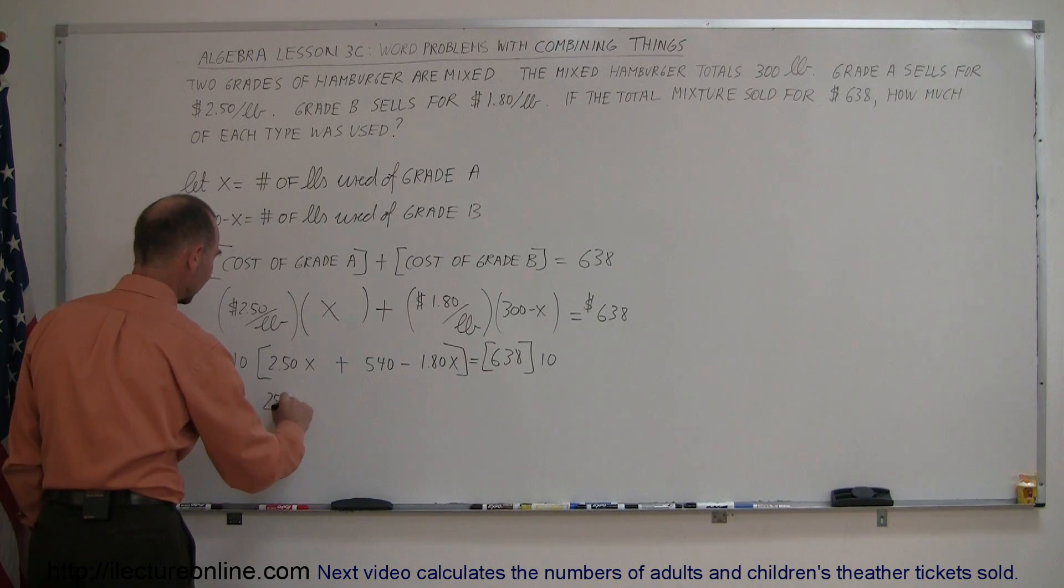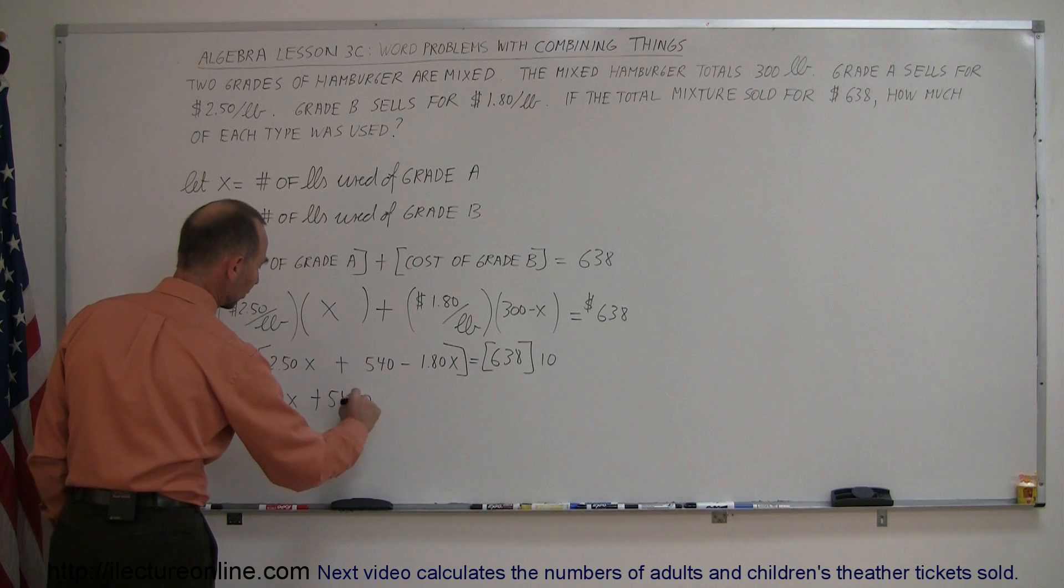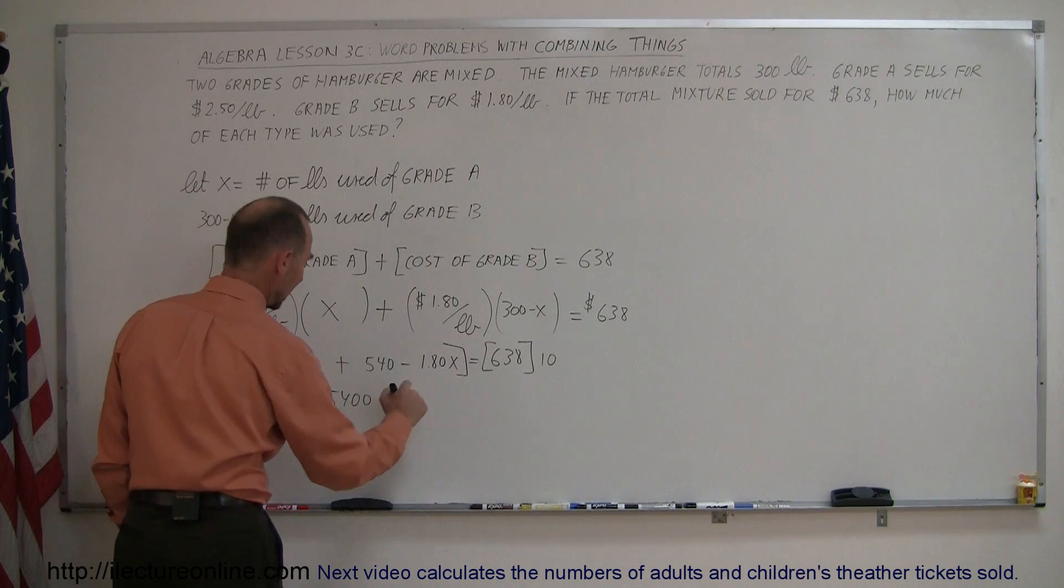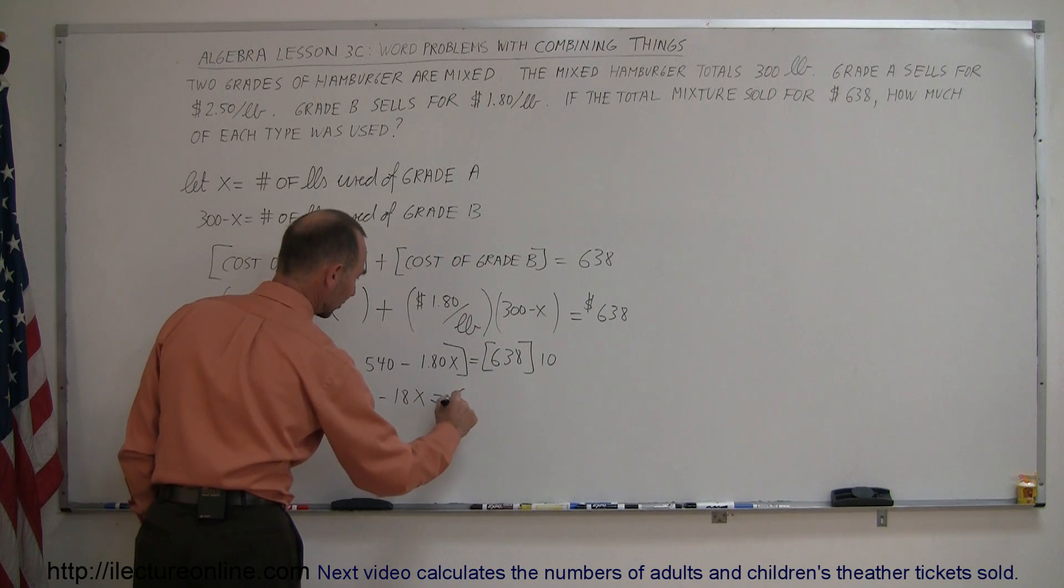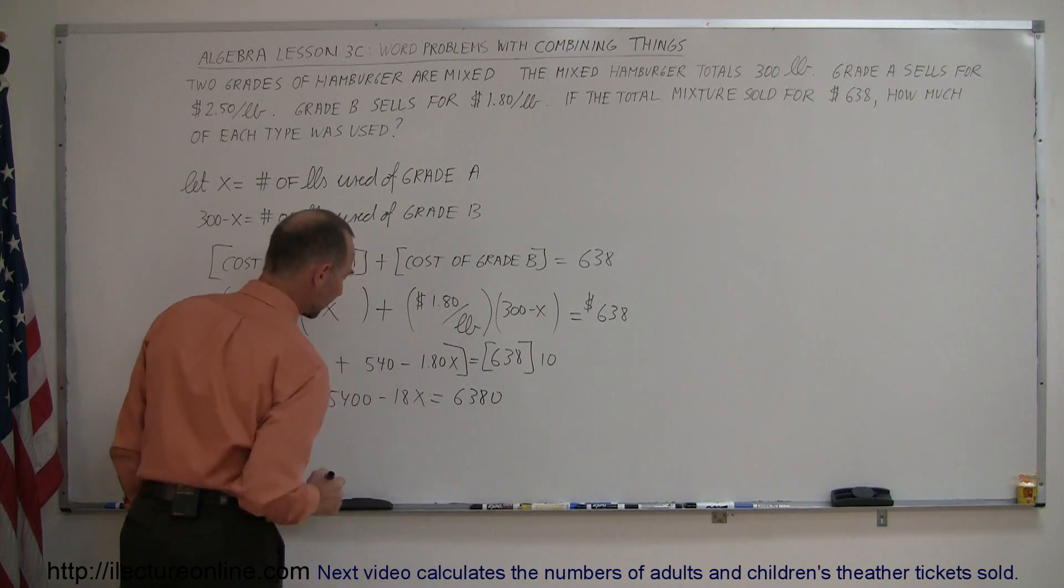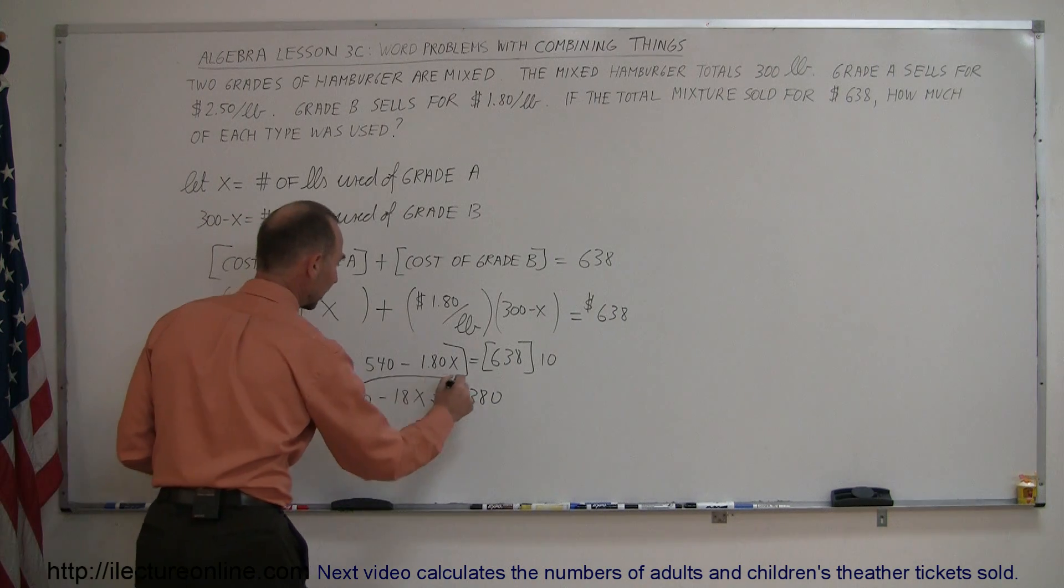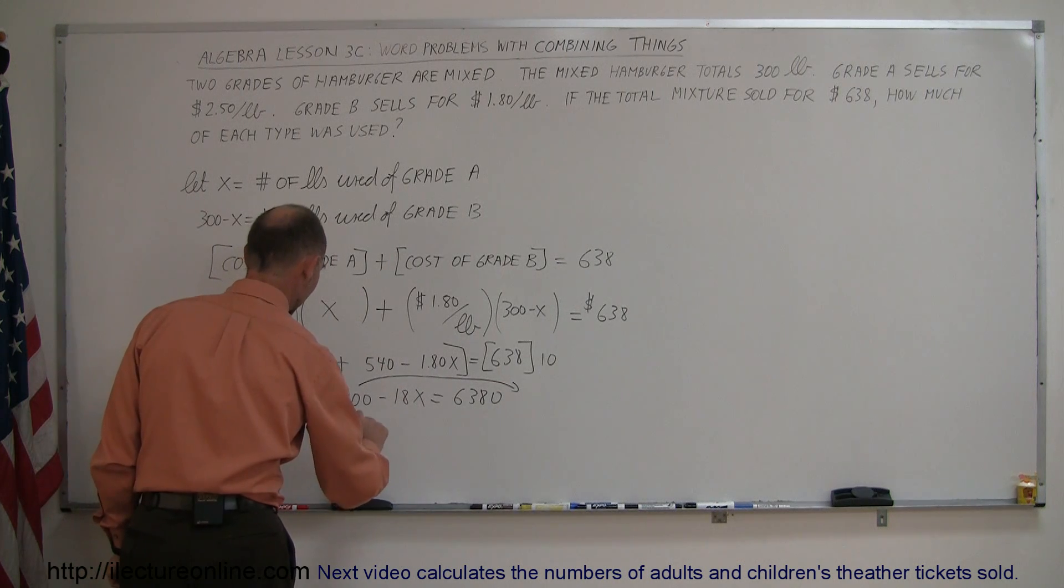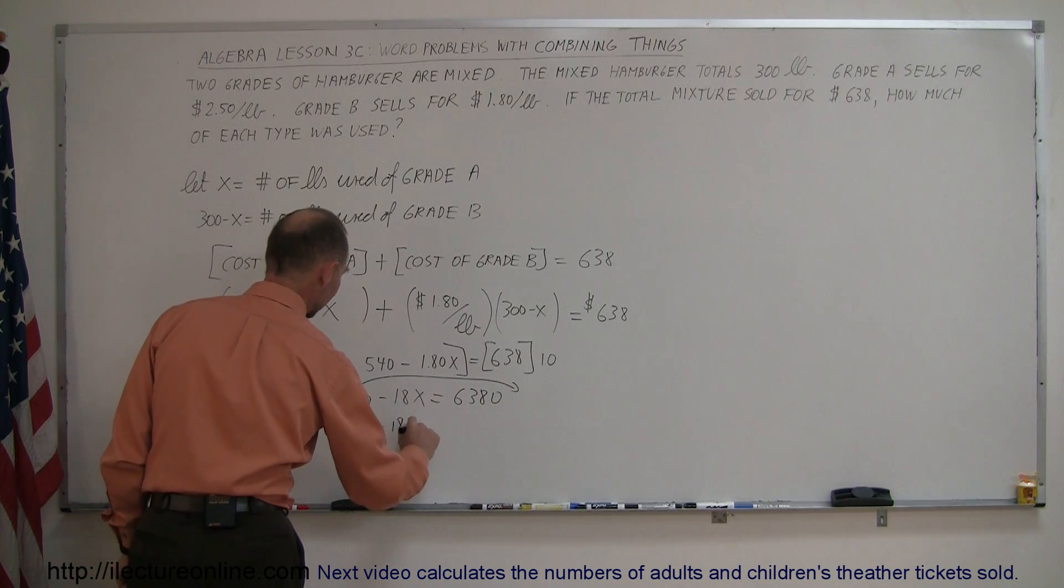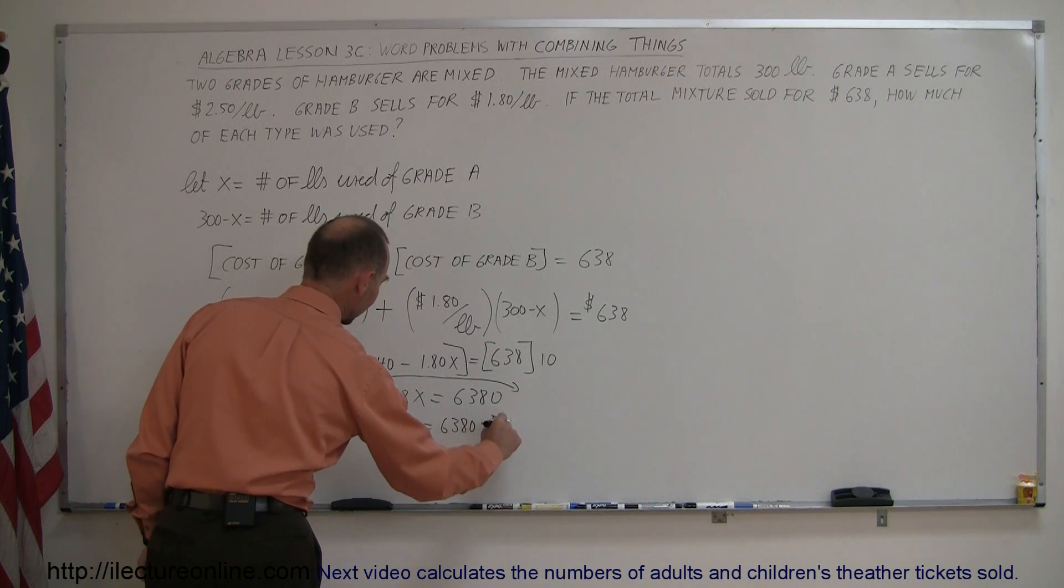10 times this gives me 25X, 10 times this gives me plus 5400, and 10 times this gives me minus 18X, and that equals 10 times this, which is 6,380. Now we keep all the terms of the X on the left side of the equation, move all the terms that do not have an X to the right side of the equation. So here we get 25X minus 18X equals 6,380 minus 5,400.